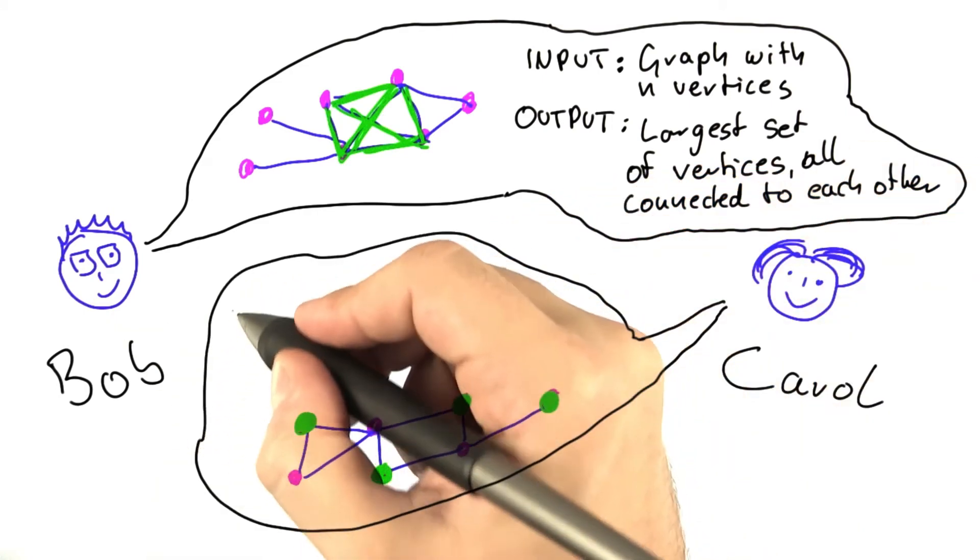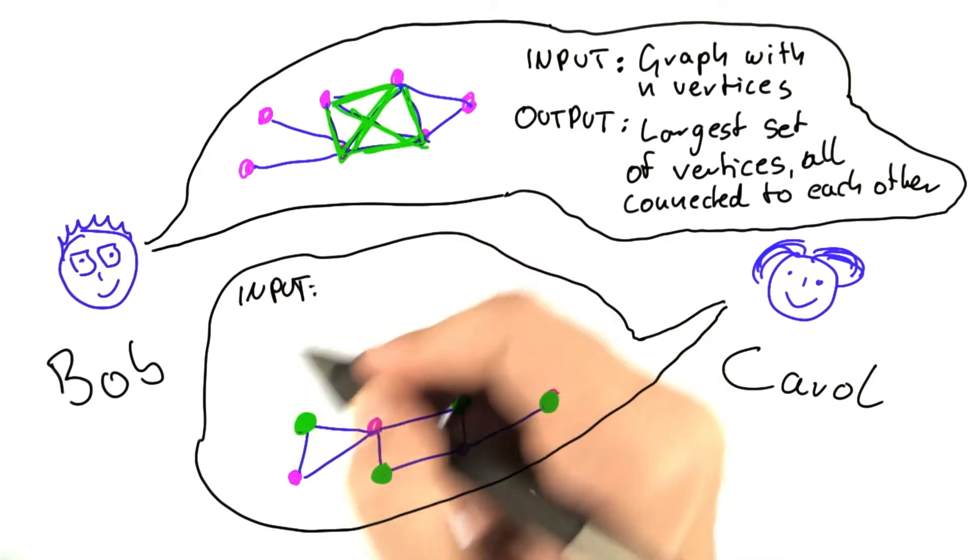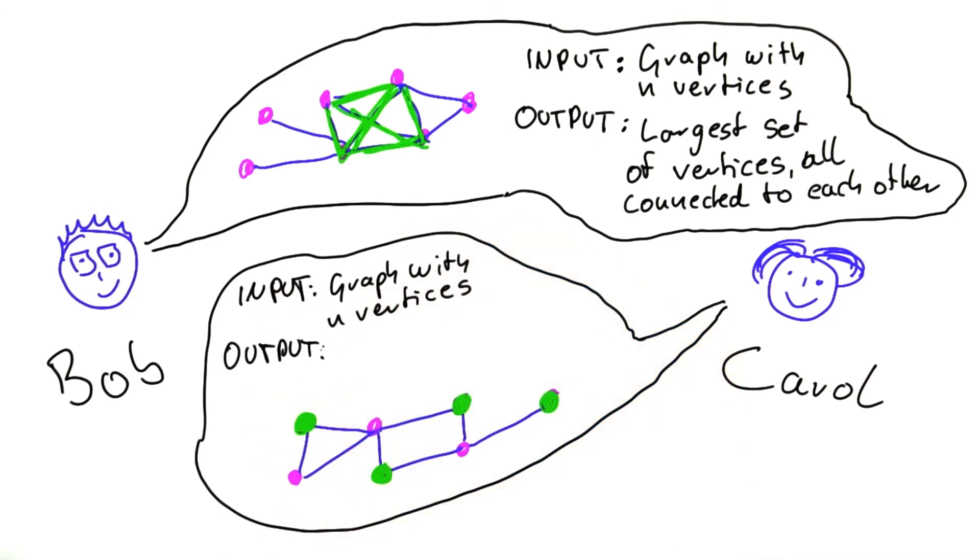So what Carol is looking for, again, the input is a graph with n vertices. And the output is the largest set of vertices, not all connected to each other, but none connected to each other.